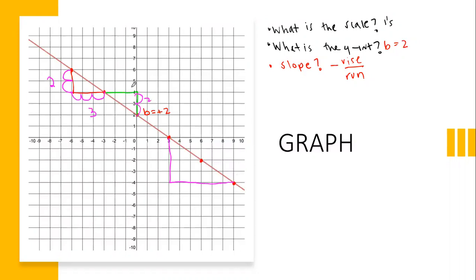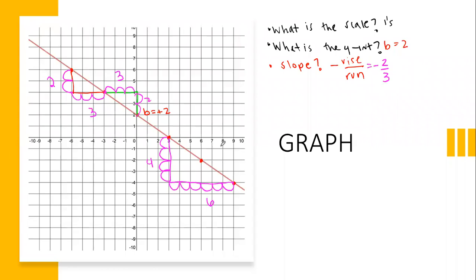Or I could use this one over here — it would be the same thing: rising two, running three. This one is rising four and running six. All of these reduce into the same thing, which is negative two over three. There's my slope — negative two over three.